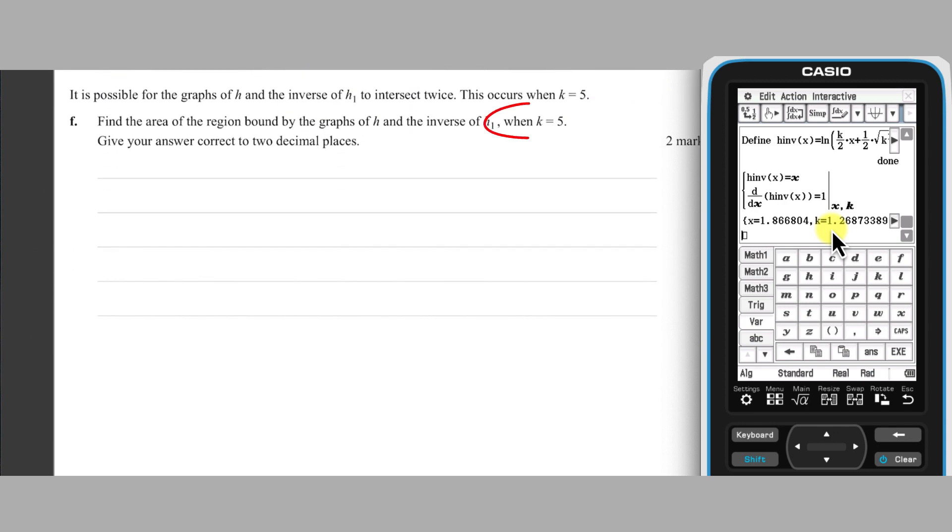Part F is about the case where K equals 5, when the graph of H and the inverse of H1 intersect twice. This will look something like this.